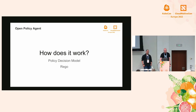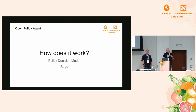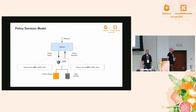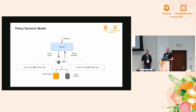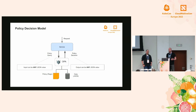How does OPA work? There are basically two key things: the policy decision model and Rego. In the policy decision model, you have a service that serves requests. Rather than making a policy decision itself, the service forwards the request to OPA. That query is just a REST call and the input is just any JSON. OPA, based on the policy and data it has available, makes a decision and returns it to the service. The response is also just JSON.